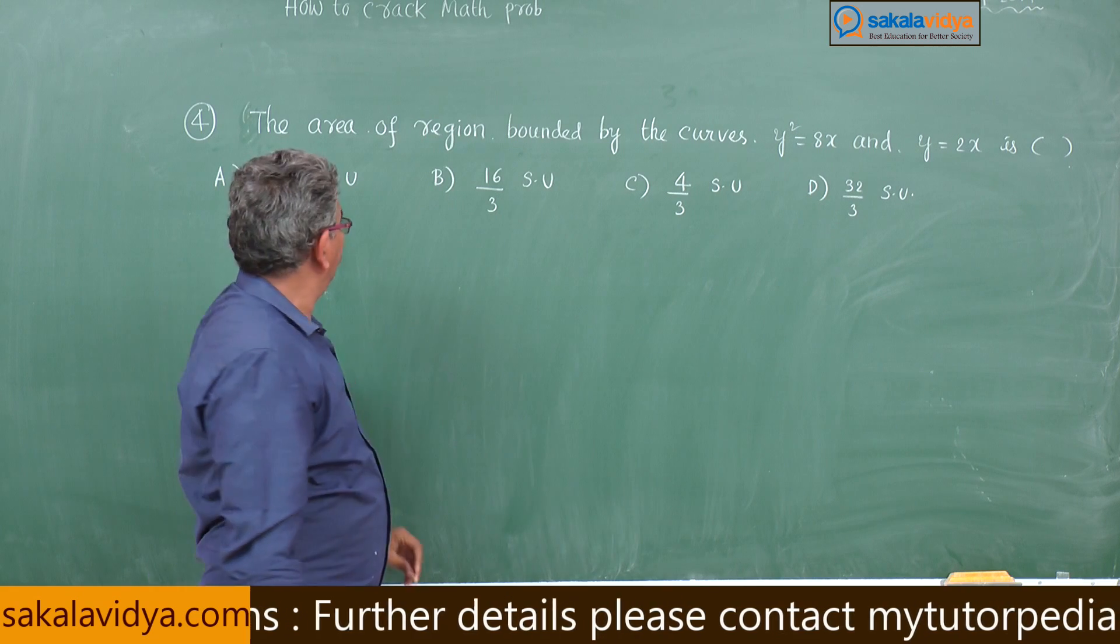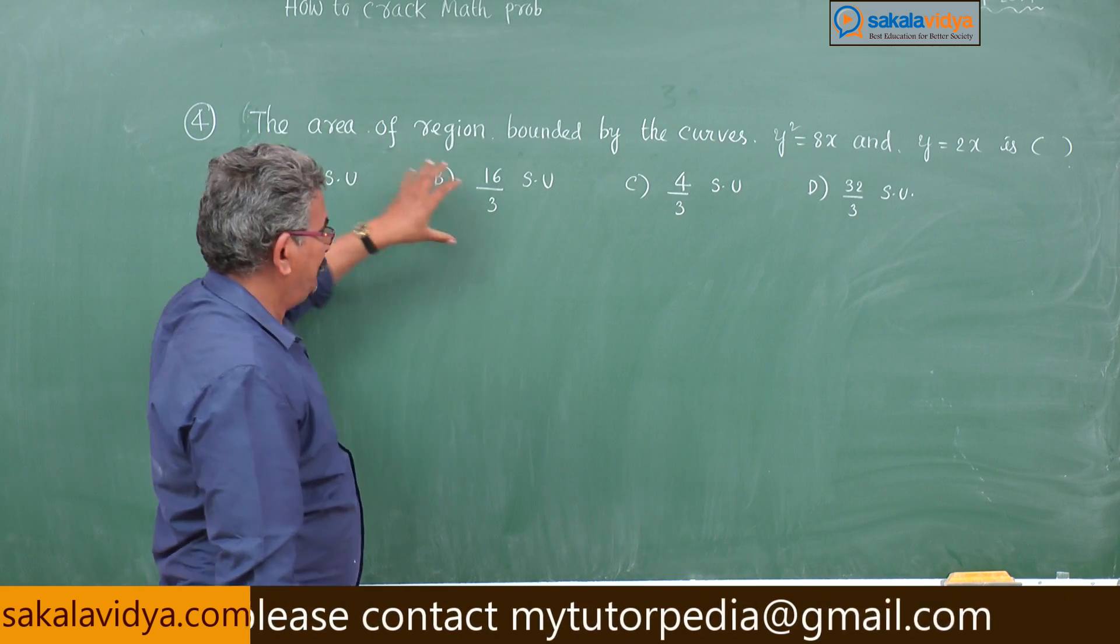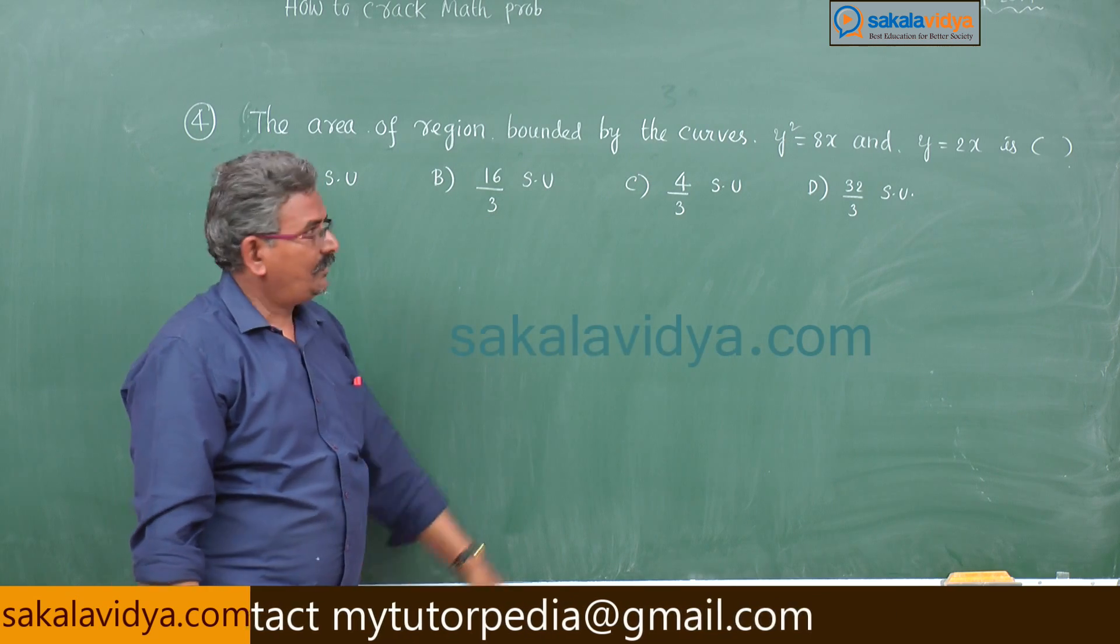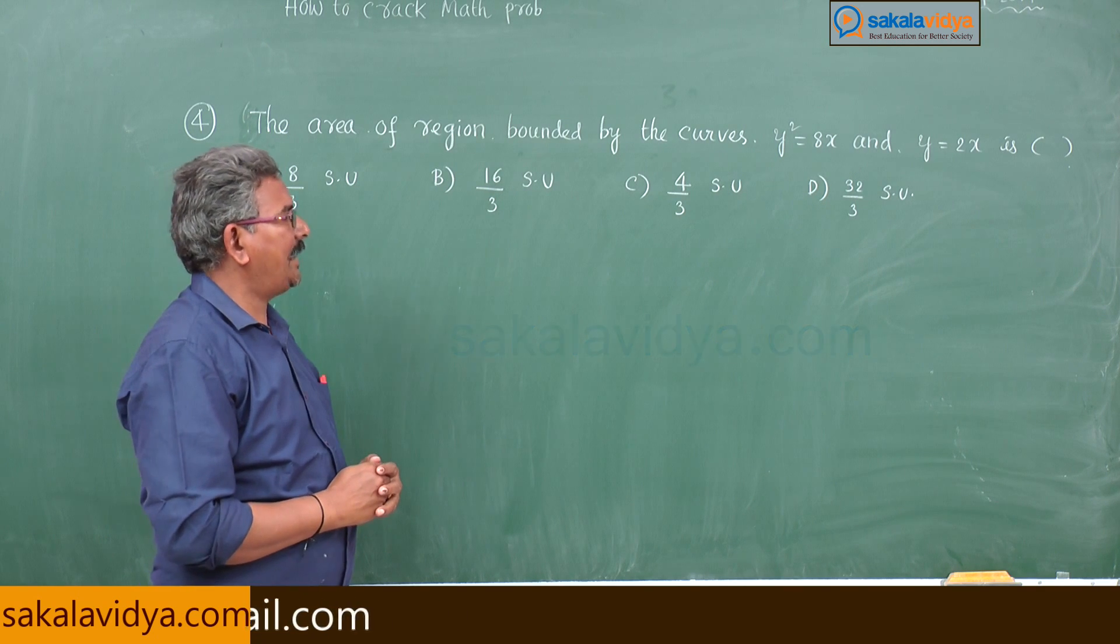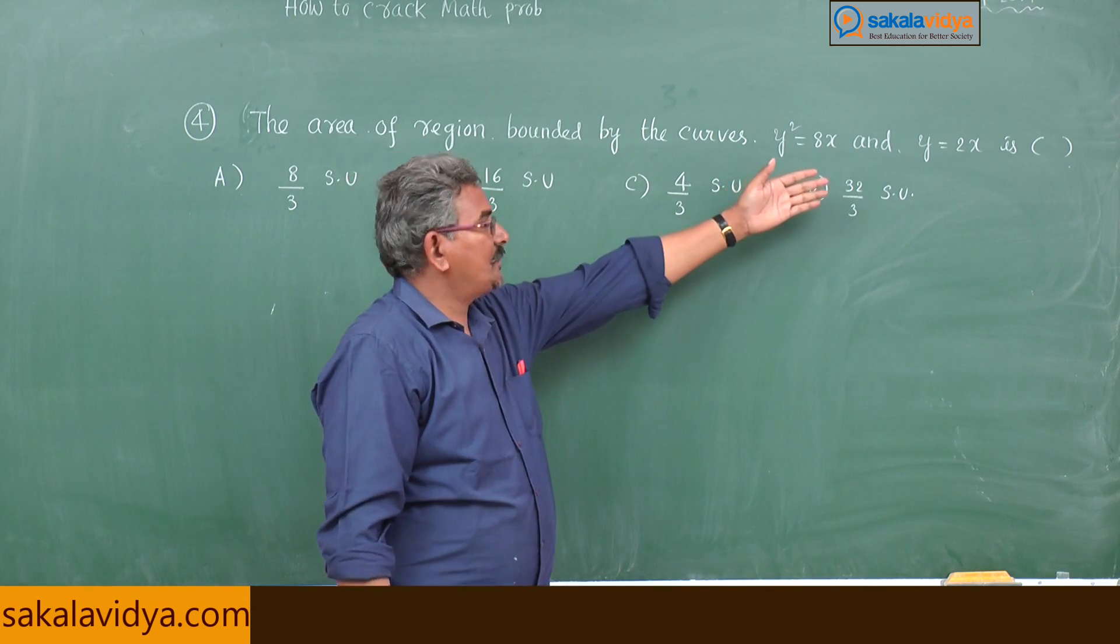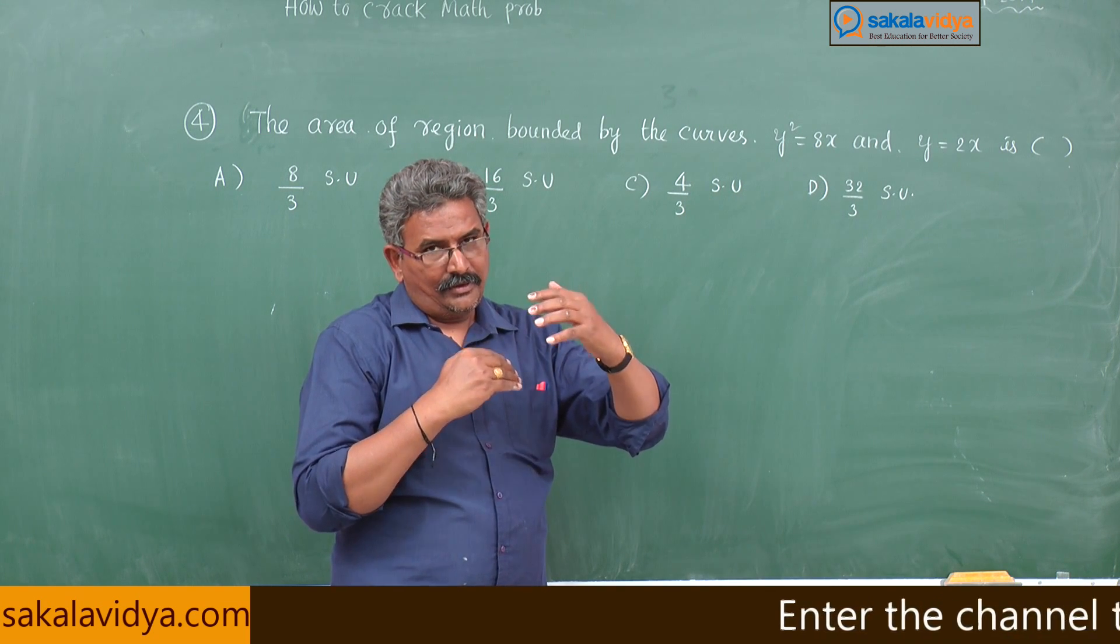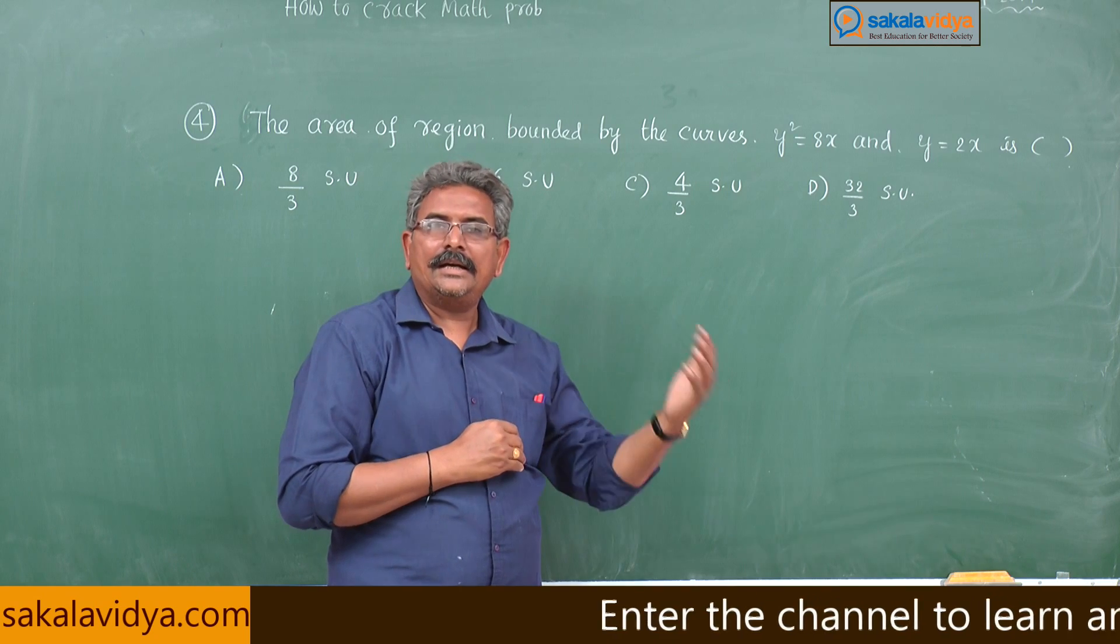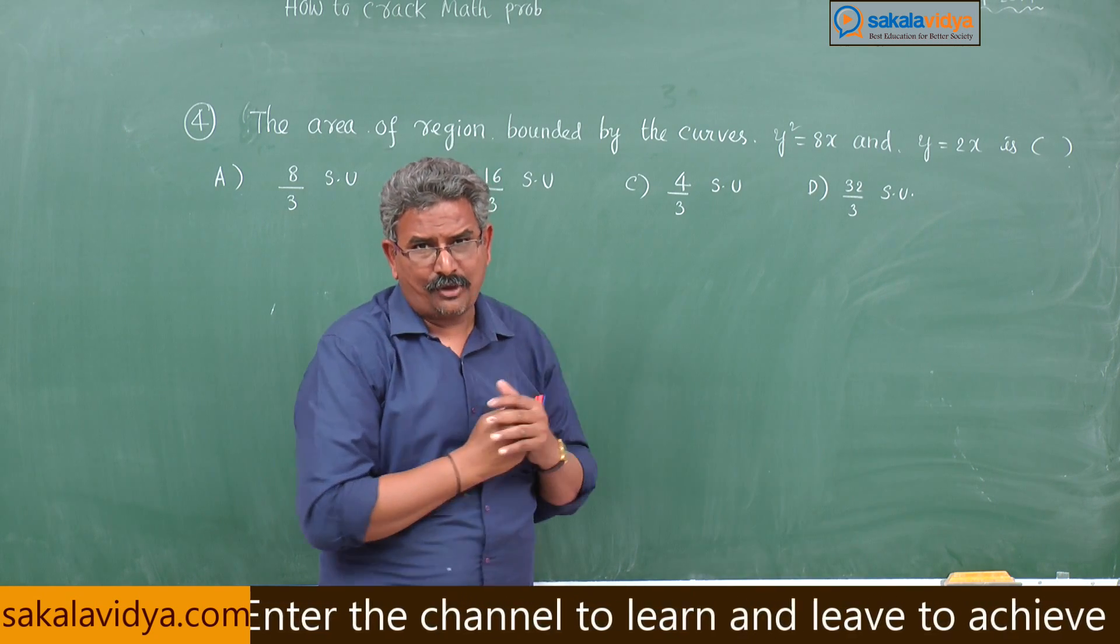You have to find area enclosed between the curves y square is equal to 8x and y is equal to 2x. You know y square 8x is a curve, y is equal to 2x is a line. The area bounded between a curve and line we have to find out. You know how lengthy this problem is.